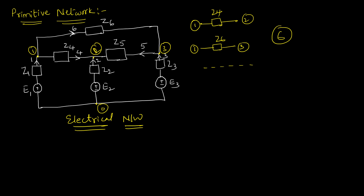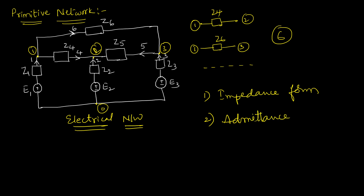For any given network, we can represent any unconnected branch in two forms. The first form is the impedance form, and the second form will be the admittance form. Let us represent the network component in both these forms.